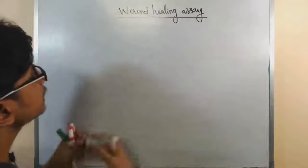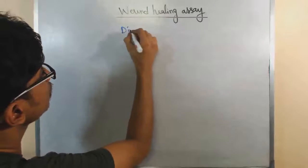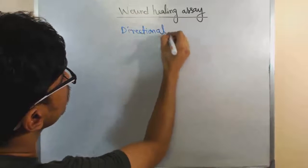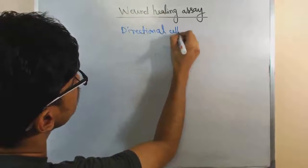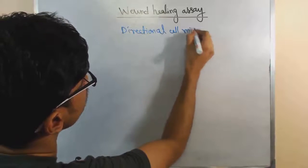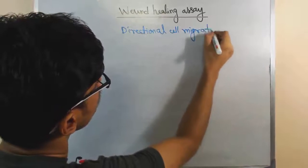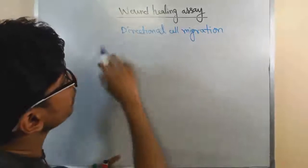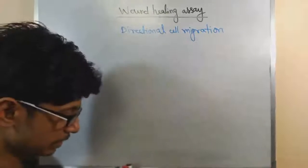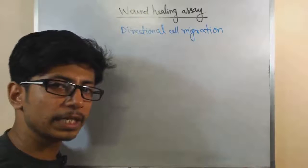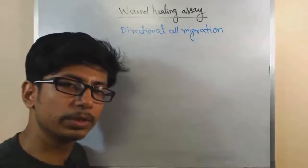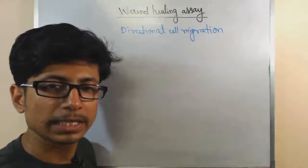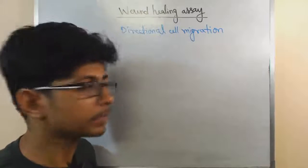What we mean by directional cell migration: directional cell migration means in every different type of cell in our body, there are different types of tissues, and in different tissues there are different types of cells.